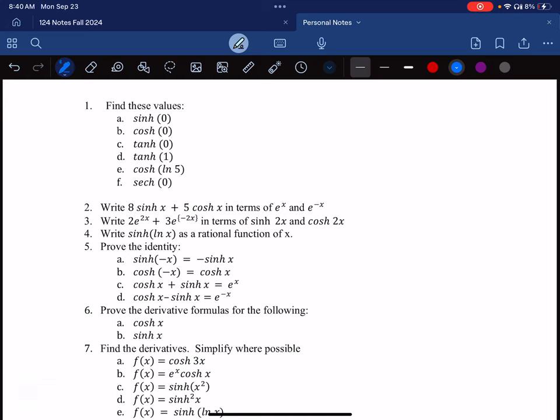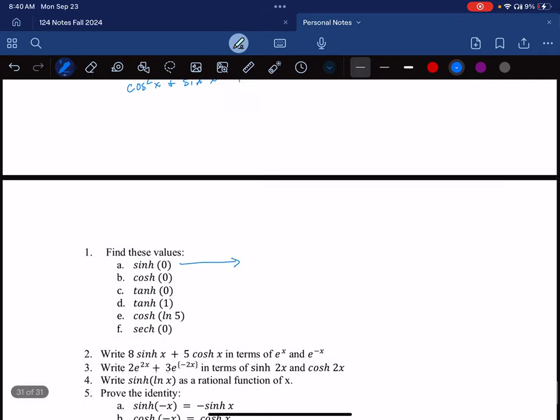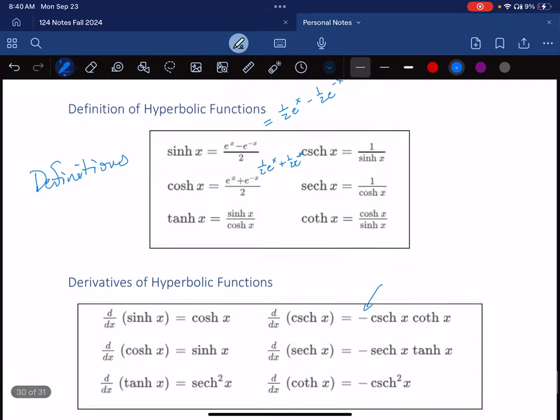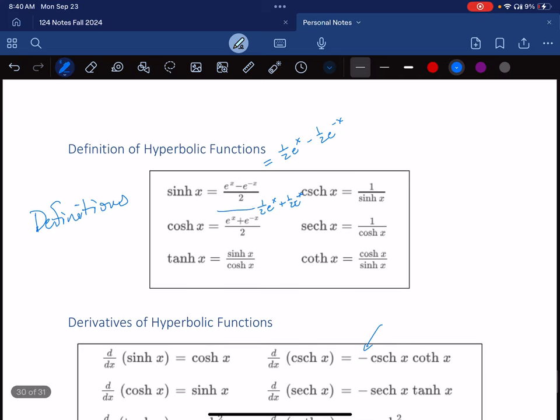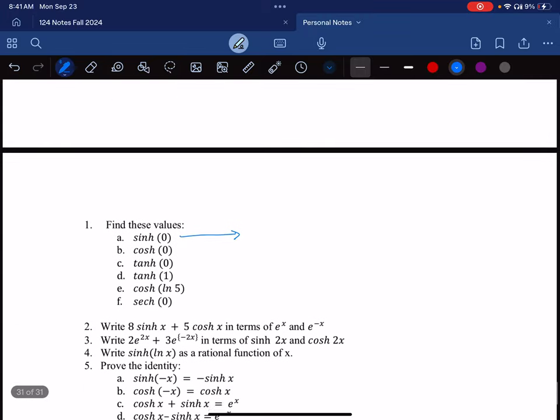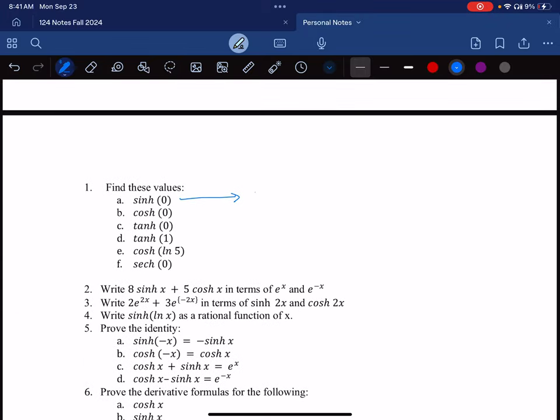And maybe like I'll show you a couple, like let's say we'll do this one, find sinh of zero. So what I would really do is come back up here and remember the definition of hyperbolic sine. So I have e to the x minus e to the minus x over two.